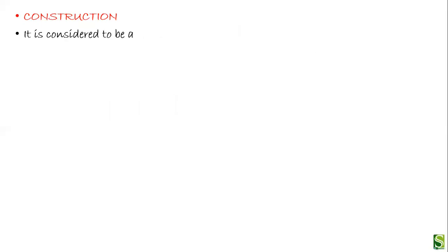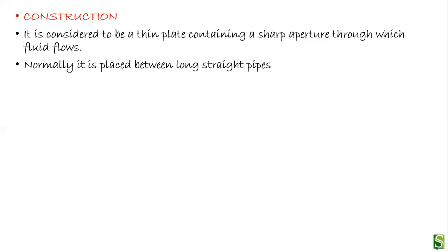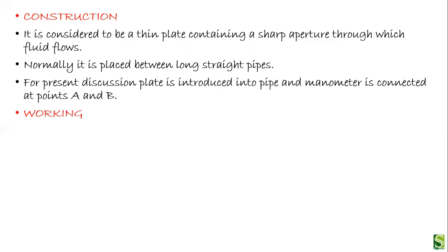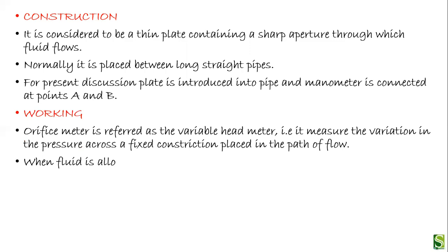The construction of the orifice meter: it is a thin plate containing a sharp aperture through which the fluid flows, normally placed between long straight pipes. A plate is introduced into the pipe and a manometer is connected at points A and B. The orifice meter is referred to as a variable head meter — it measures the variation in pressure across a fixed constriction placed in the path of the flow.